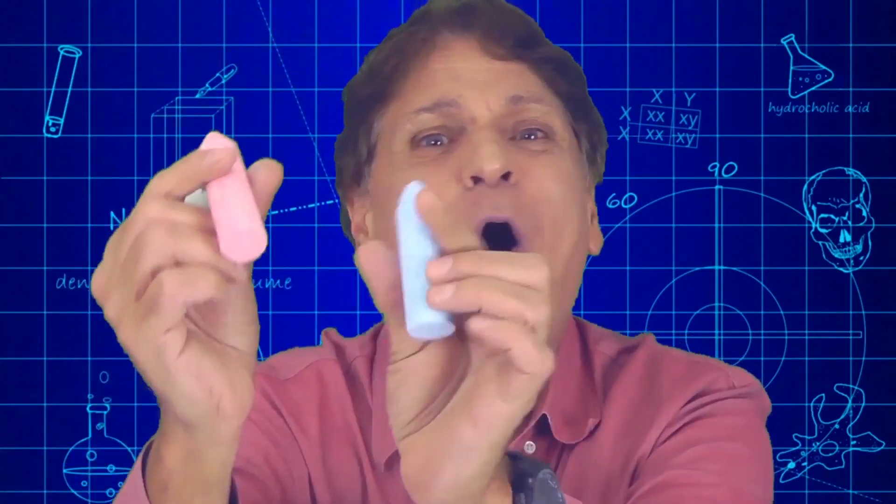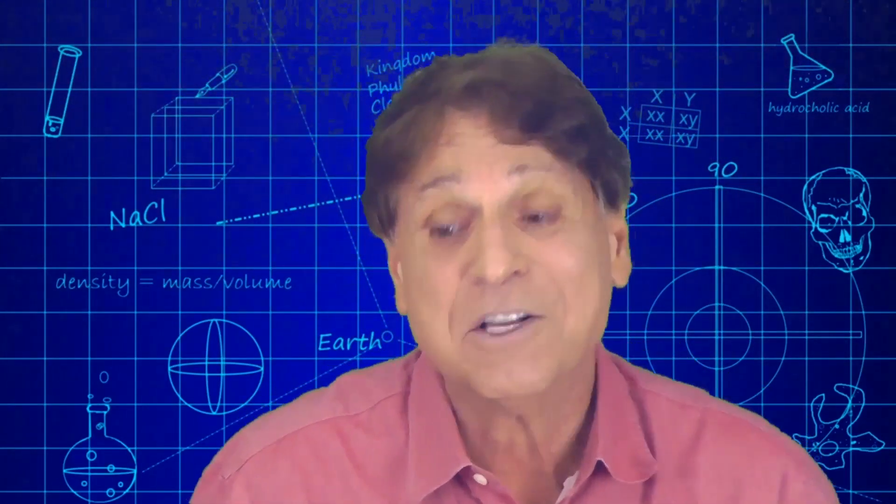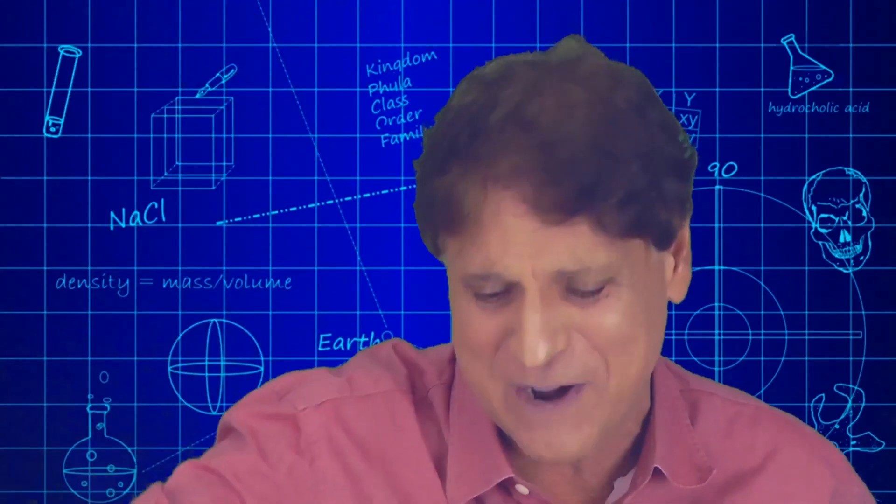For this activity, we're going to need the following materials. Sidewalk chalk. Get a whole bunch of different colors. It'll be fun. You'll be able to make layers of chalk material. Plus, you're also going to need salt. Regular grocery store salt works great for this. In addition, you'll need a container with a lid that can be screwed on tightly.